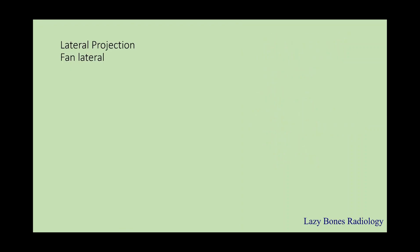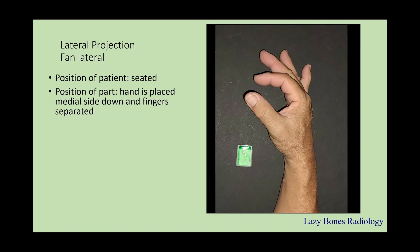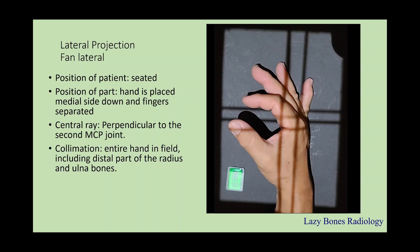Next we have our 3rd lateral, known as a fan lateral. Patient seated, as you can see here. The position of the hand is medial side down and the fingers are separated. It is very important that the radius and ulna are superimposed when you are positioning. The central ray is perpendicular to the 2nd MCP joint, as you can see here. Make sure to collimate the entire hand and the distal part of the radius and ulna. SID is 40 inches. Make sure to label correctly.